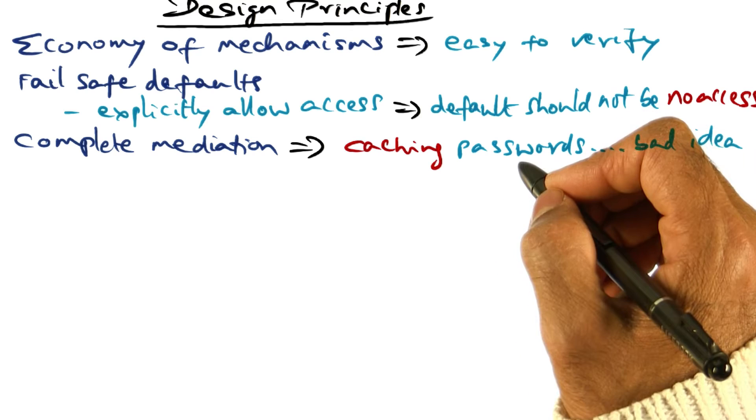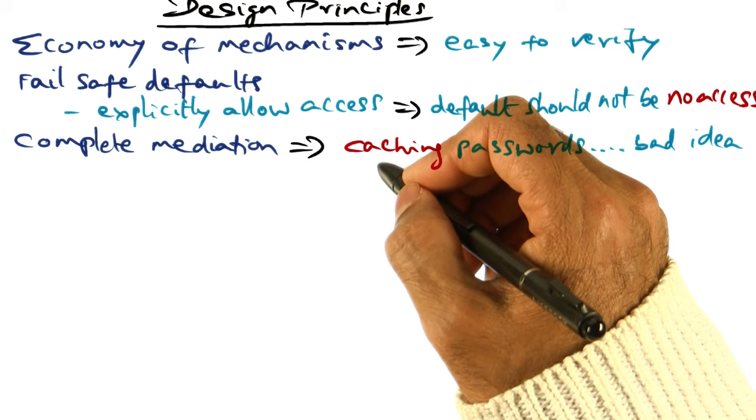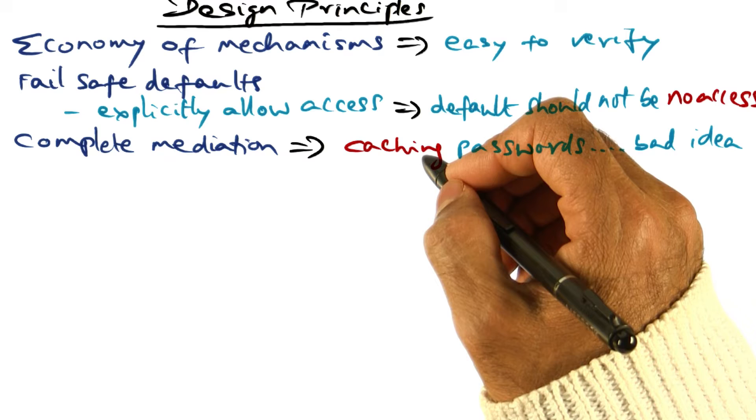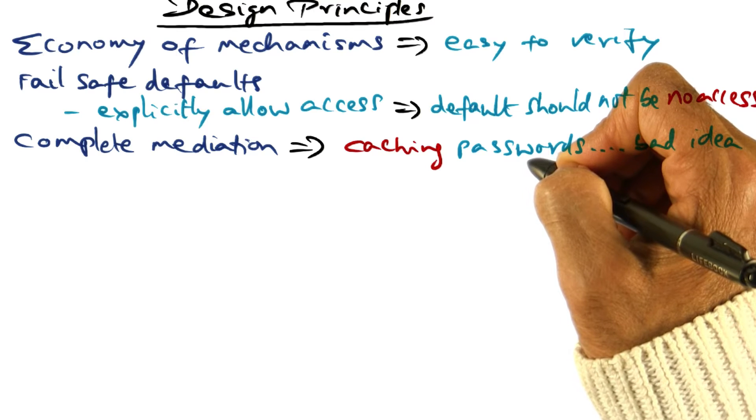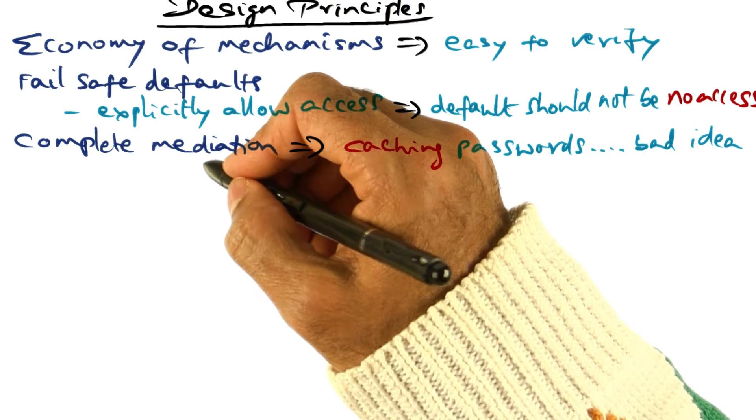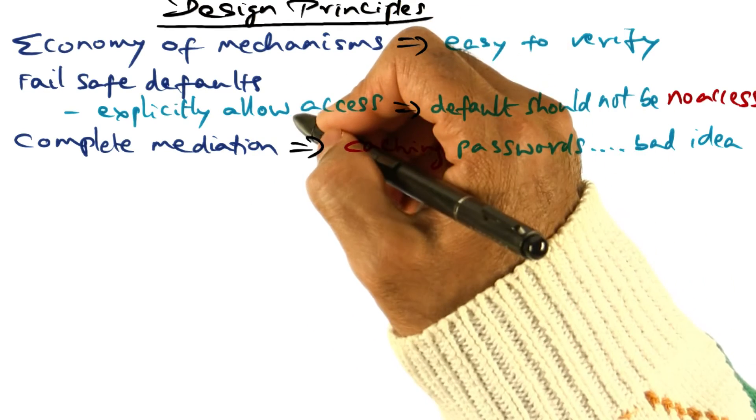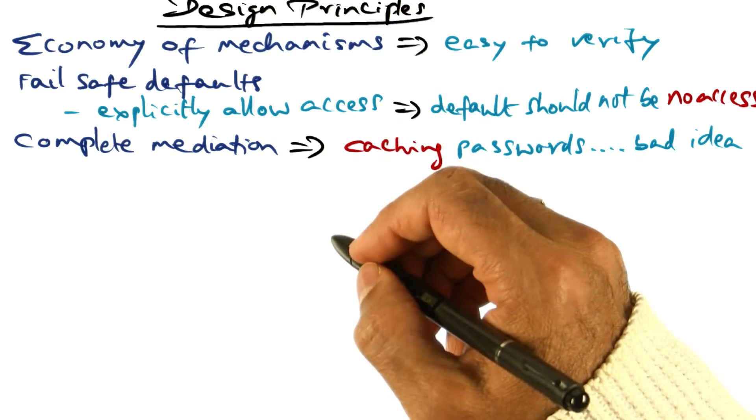Because the actual password file on the storage system may have changed, but the cached copy in memory may not be reflecting it, and that would result in violation of security if authentication uses the cached copy instead of the persistent copy. So that's an example of why you need complete mediation in designing a secure system.